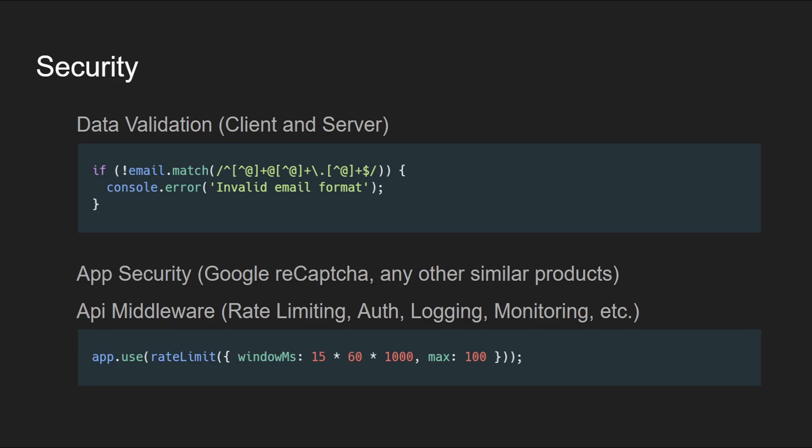Next is data validation both on the client and server. For React we should focus on the client side, but front-end developers should at least keep in mind to discuss with back-end developers what server-side validations exist, because client and server validations should normally be in sync. Next is app security using Google reCAPTCHA or similar products — tools to protect against spam and abuse by distinguishing human users from bots.